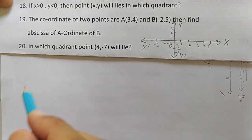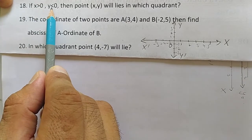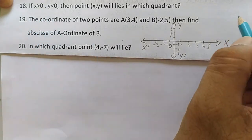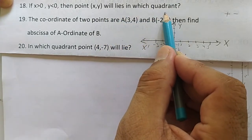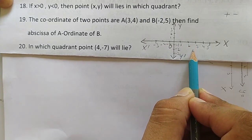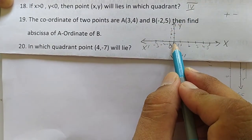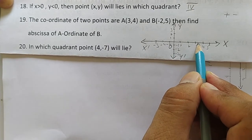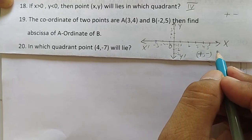Question 18: if x > 0 (x is positive) and y < 0 (y is negative), in which quadrant does the point (x, y) lie? Positive x means to the right, negative y means downward, so the point lies in the fourth quadrant.